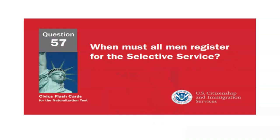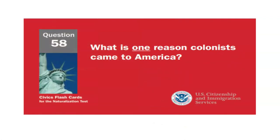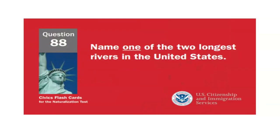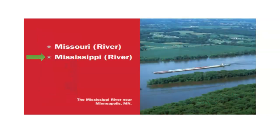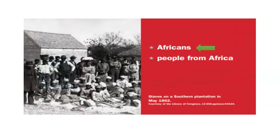When must all men register for the Selective Service? At age 18. What is one reason colonists came to America? Freedom. Name one of the two longest rivers in the United States. Mississippi River. What group of people was taken to America and sold as slaves? Africans.